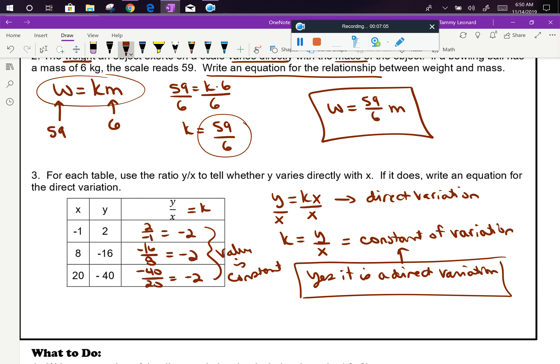When we find that to be true, the problem asks me to follow up by writing an equation for the direct variation. Conveniently, the work we did to see whether there was a constant of variation is the same work we would need to do to come up with the equation. Remember we're working in this y equals kx format and that we now know that k is negative 2. So the direct variation is y equals negative 2x.